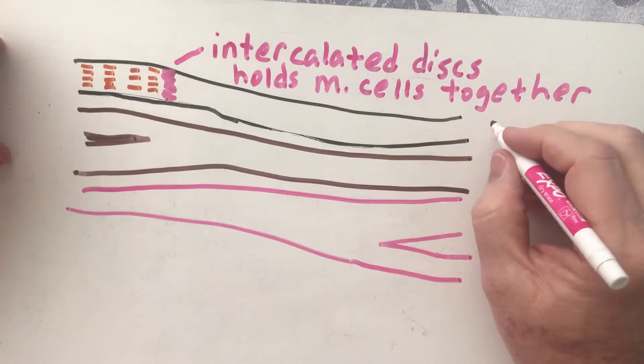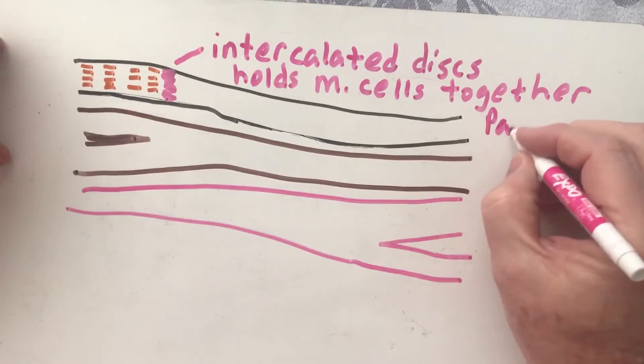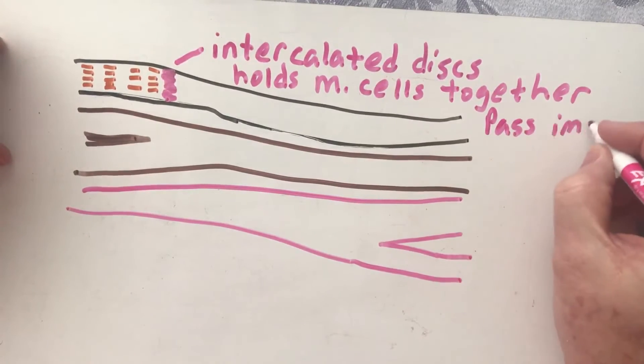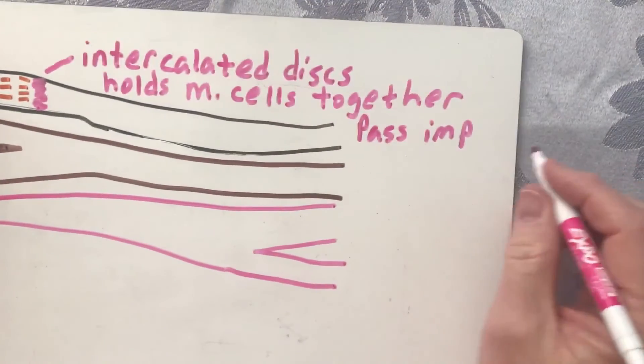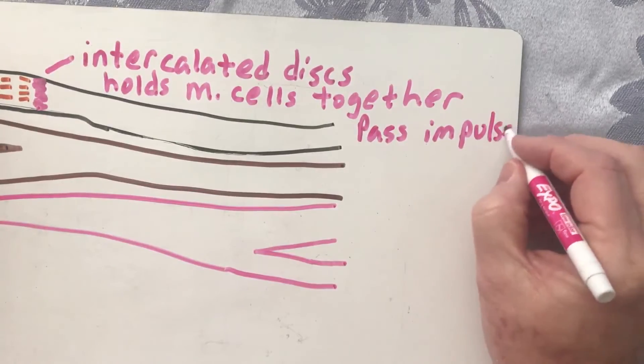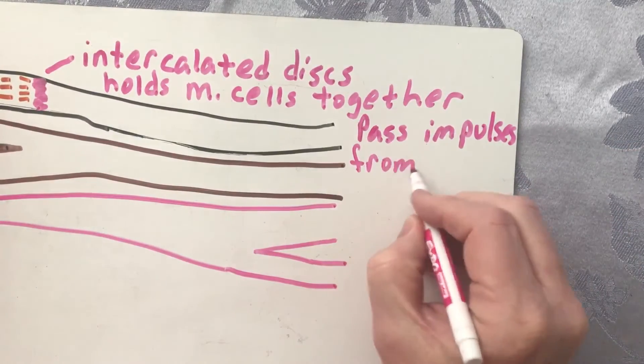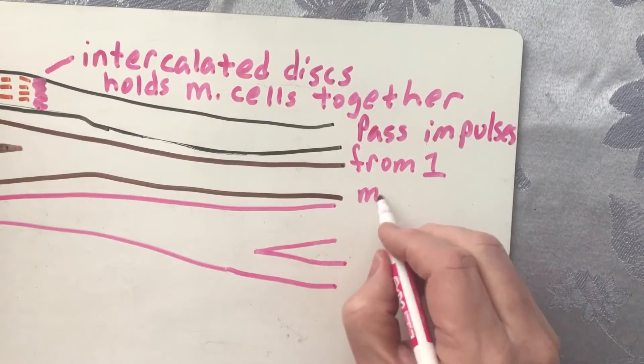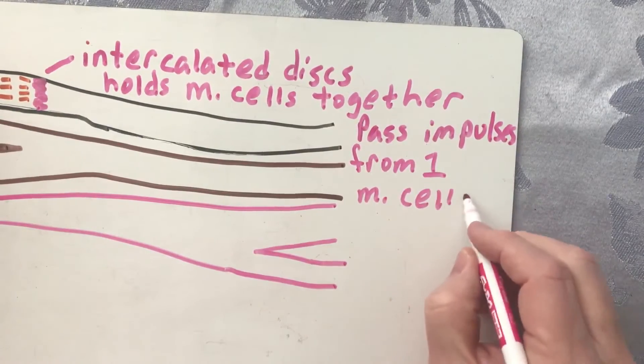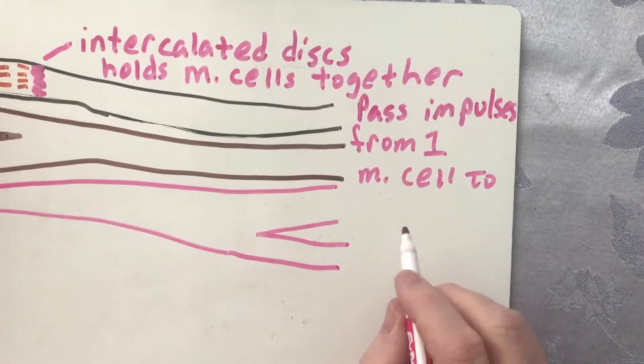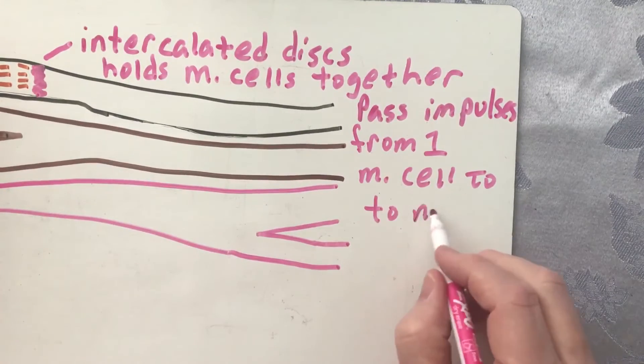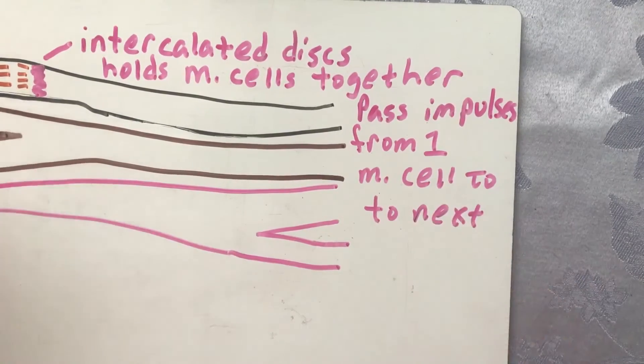So they pass impulses from one muscle cell to the next. And that's what the intercalated discs do.